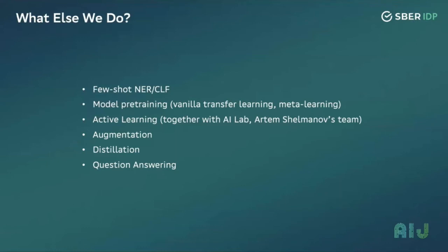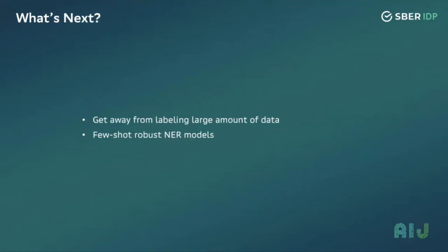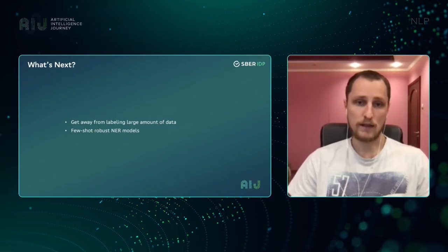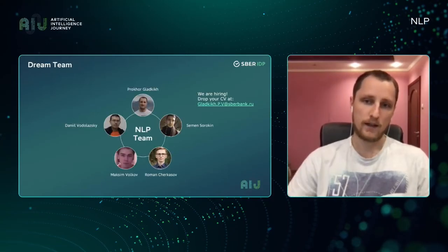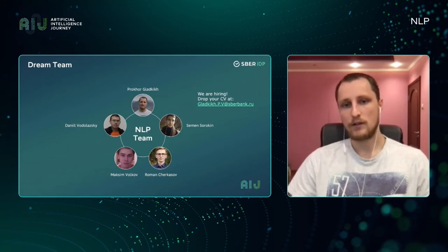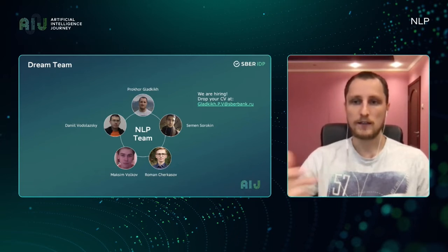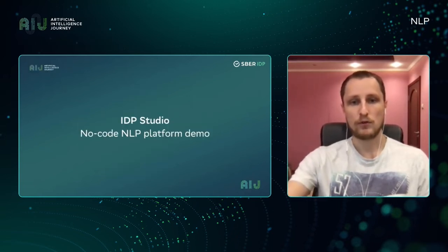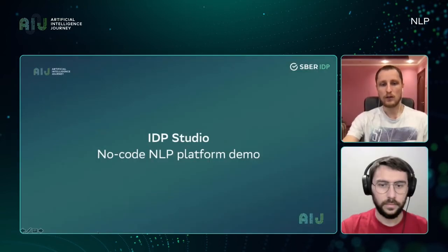We also use NER self-supervised classification, few-shot learning, model pre-training, and active learning — together with the Steam AI Lab. Augmentation, distillation, and question answering are in the plans. In the future we plan to move away from labeling large amounts of data and learn to build robust few-shot models. This is our dream team — we are enhancing it. If you want to work with us, send us a CV. Now the floor goes to Alexander to speak about the no-code studio.